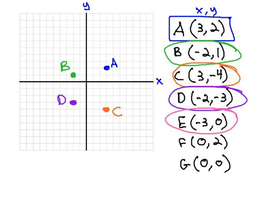Next, we see E is at negative 3, 0. Negative 3 moves us back 3 on the x-axis, and 0 means we don't move up or down at all. This is point E.